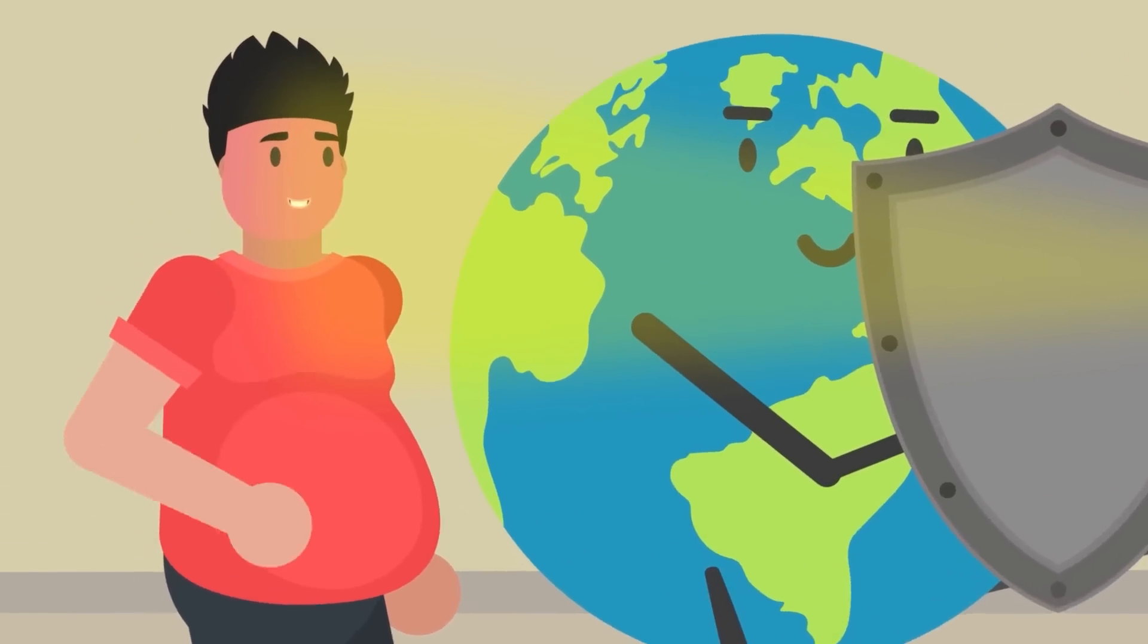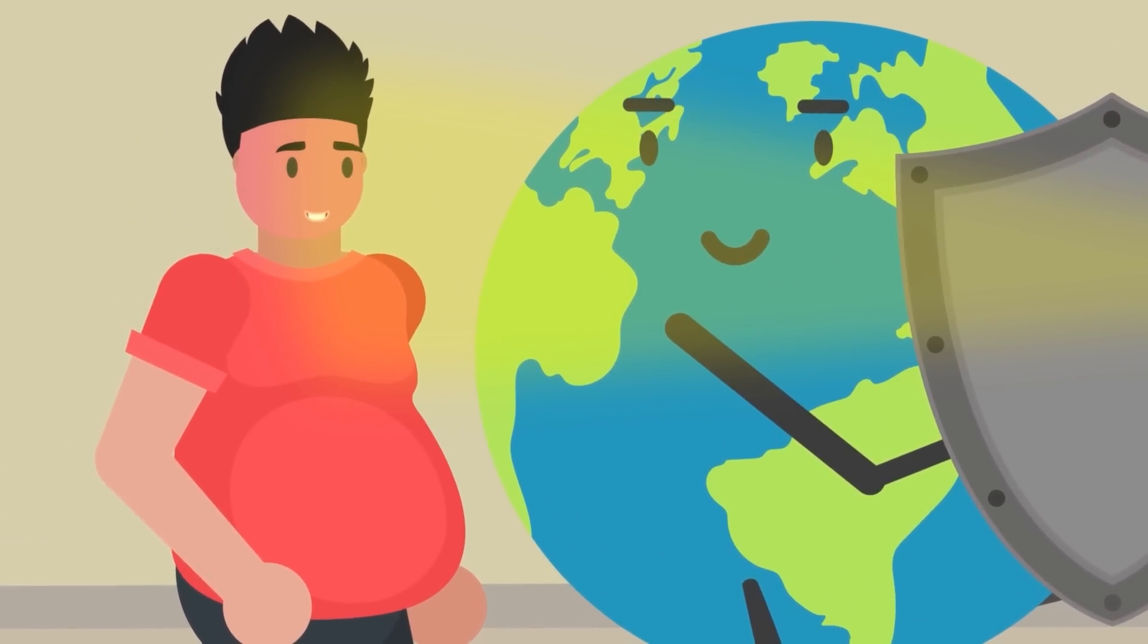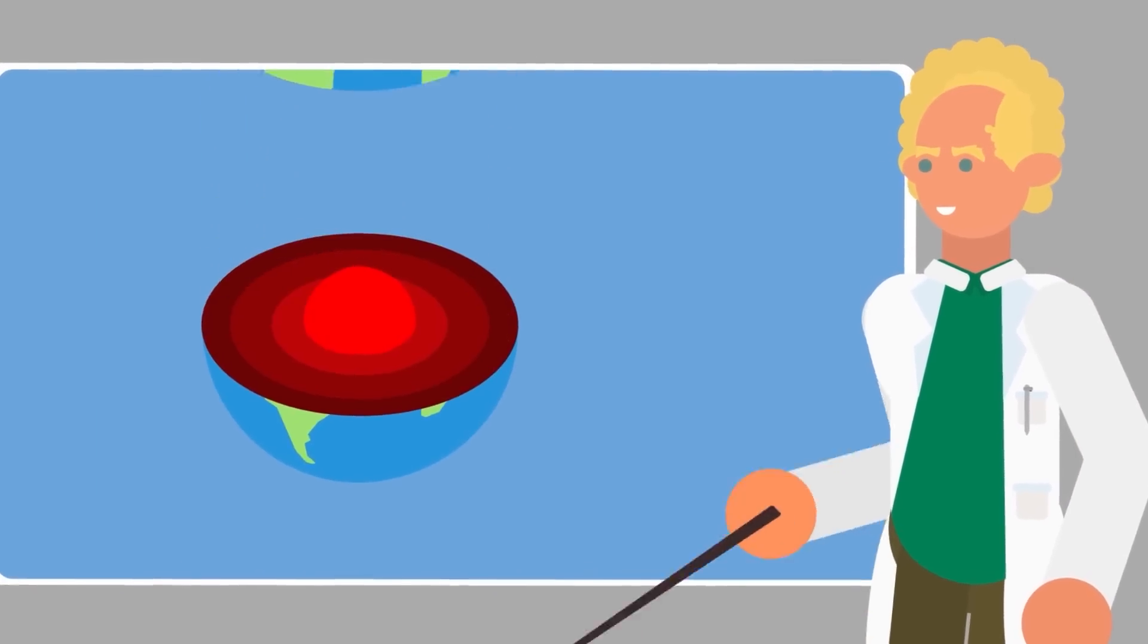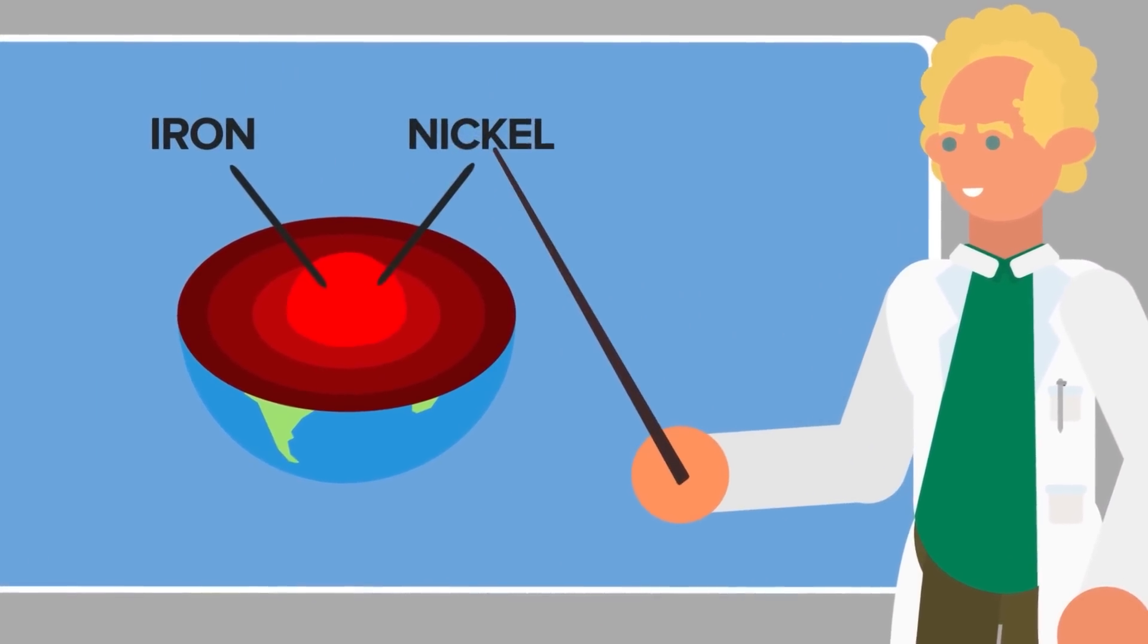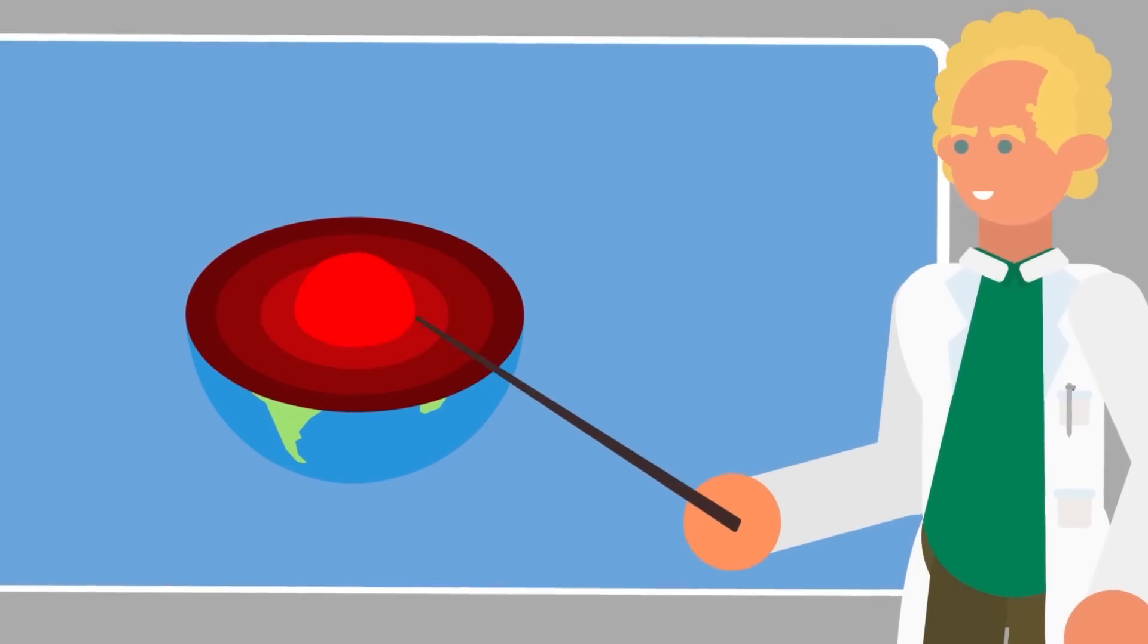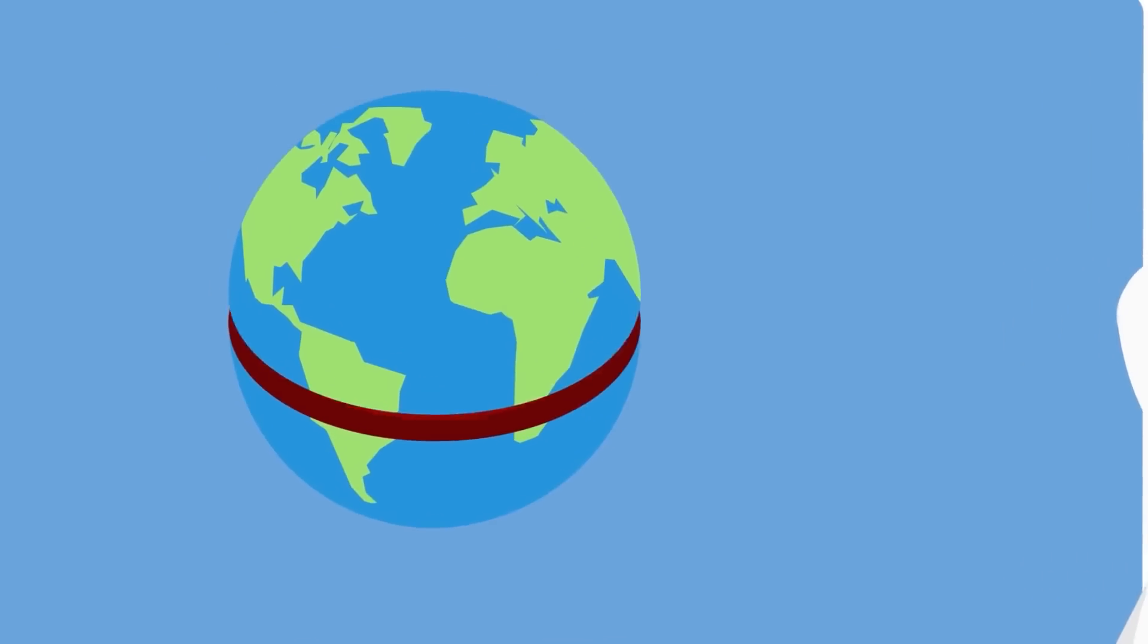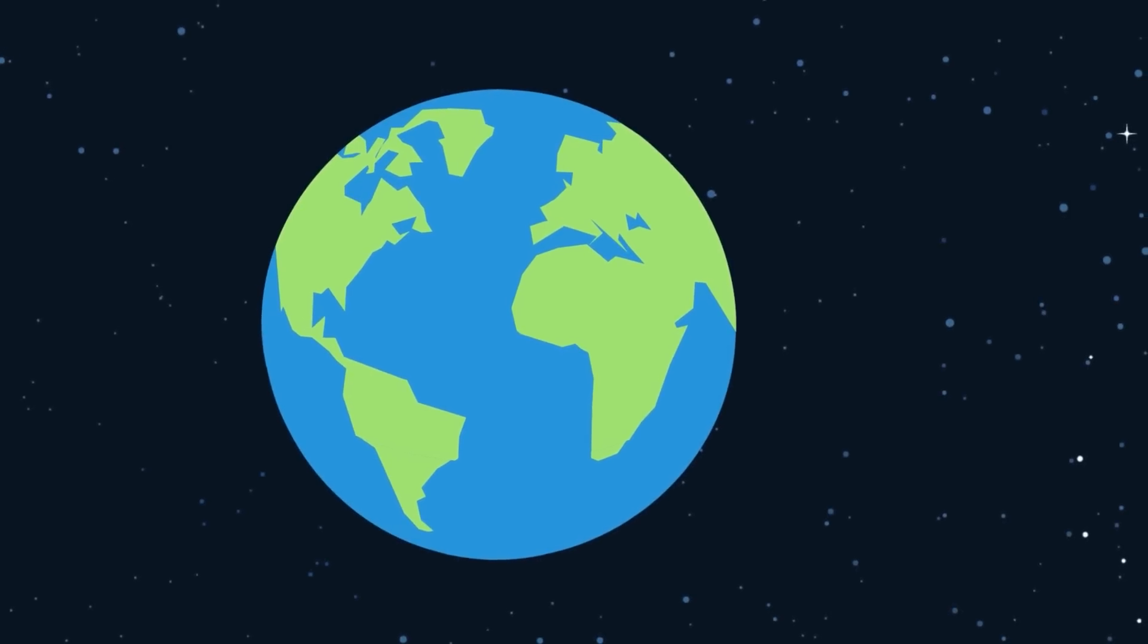But good guy Earth is there to shield you from the worst of it all, so all you feel is a nice warm ray of light, and maybe some slight sunburn. And that's thanks to the Earth's magnetic field, which is generated by the movement of molten iron and nickel in the Earth's core. All that moving and shaking of those metals in our molten core generates a massive electrical current, which in turn creates a magnetic field which stretches out deep into space.